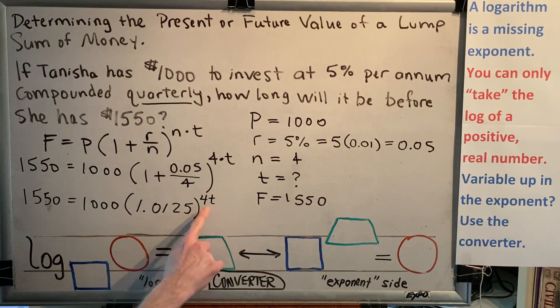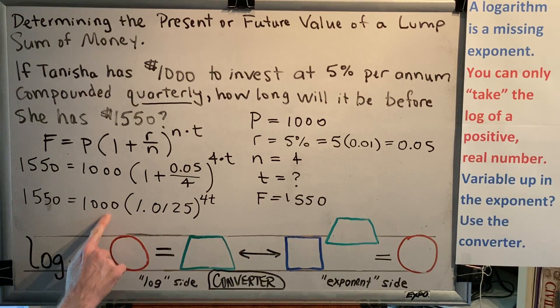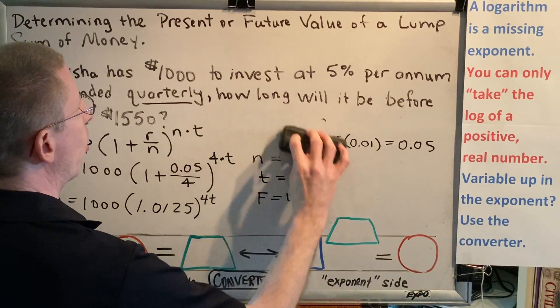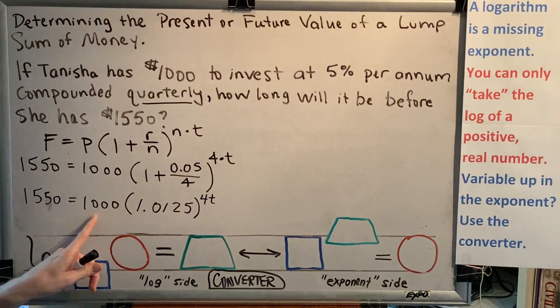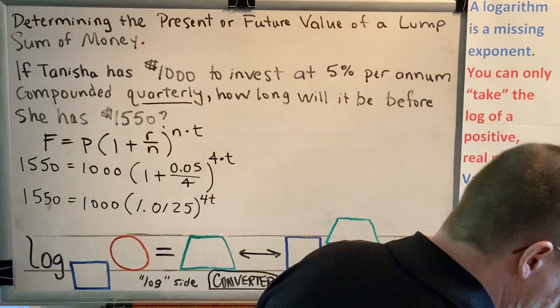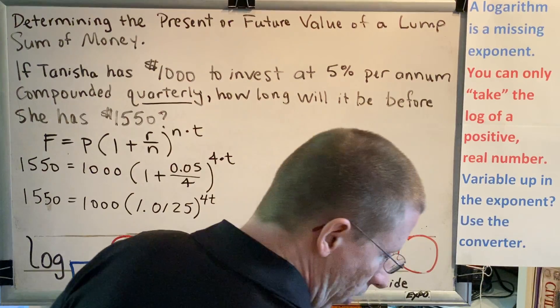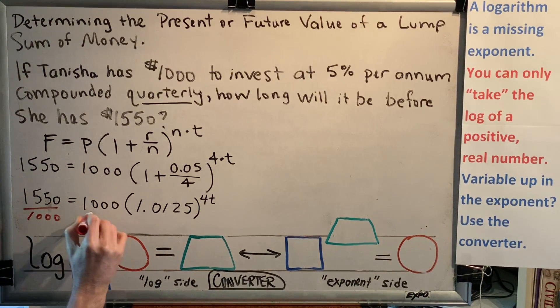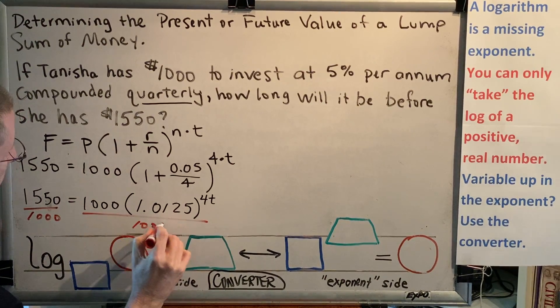In our problem, we have a base, an exponent, an argument, and this extra piece here. The 1,000 is in our way, and we need it to go away. Since the 1,000 is multiplying by the exponential, the way we will get rid of that is with division. So we're going to divide the left side by 1,000, and we're going to divide the right side by 1,000.